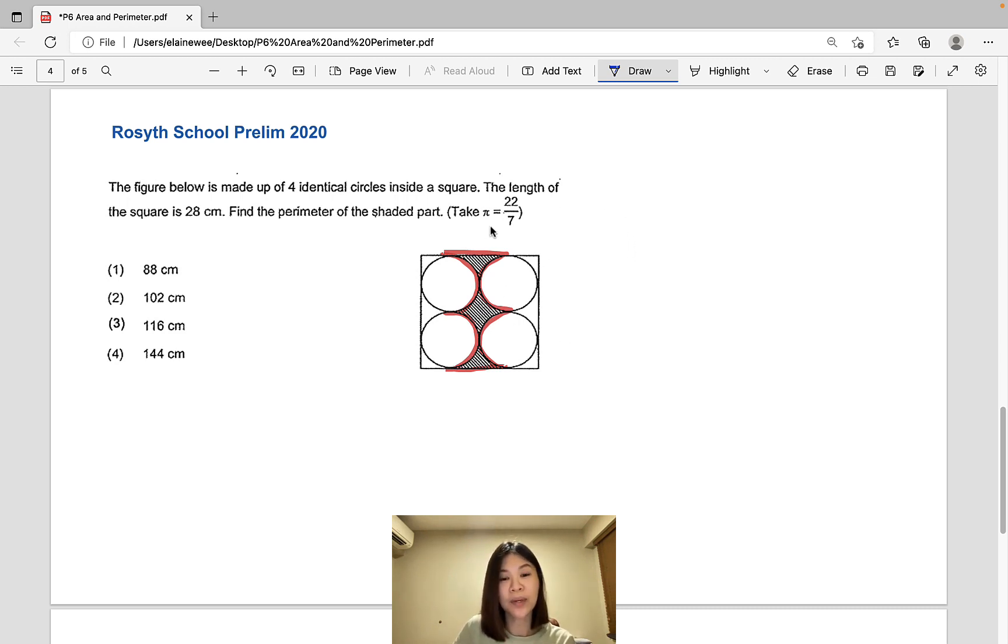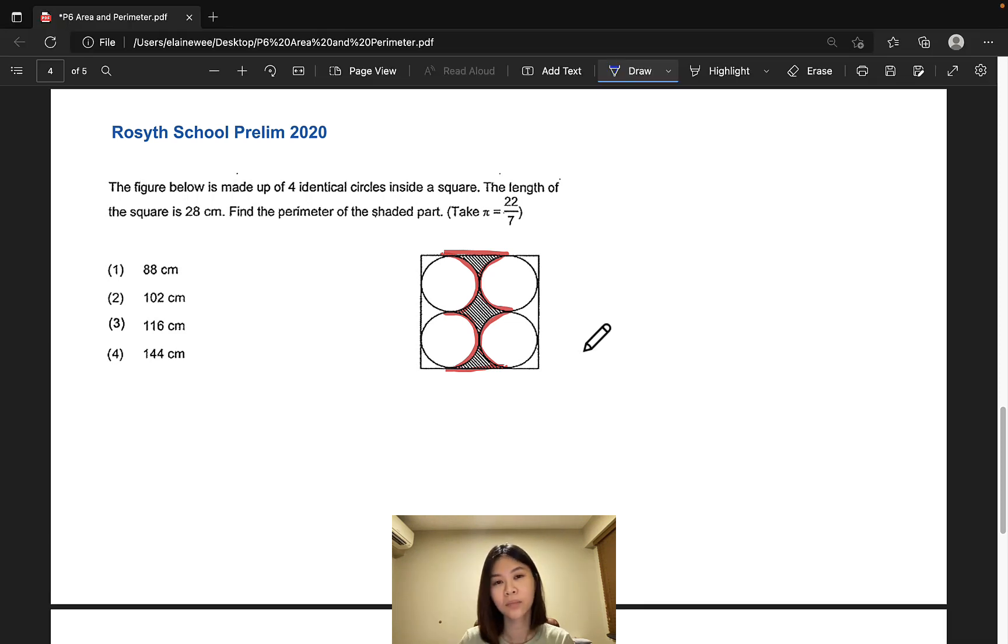Now what many students will do is that they would calculate the individual lengths and then add them up. Now, while this is not wrong, and while this is very systematic, it is very time consuming. The objective of this tutorial is to use the combined length method to save a lot of time when solving such questions. At the same time, this also prevents students from making careless mistakes because the fewer steps there are, the lower the chance of making careless mistakes.